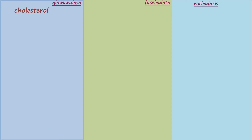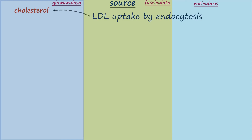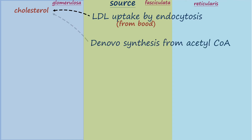The three zones of the adrenal cortex secrete three different types of hormones, but the precursor for all these hormones is the same — that is cholesterol. The source of cholesterol in the cortical cell is majorly via LDL uptake by endocytosis, and minorly by de novo synthesis of cholesterol from acetyl-coenzyme A.